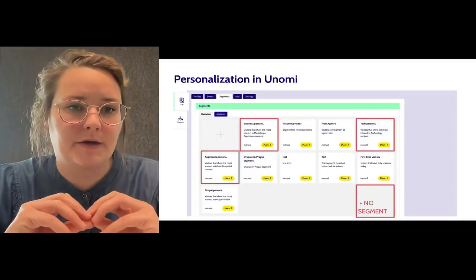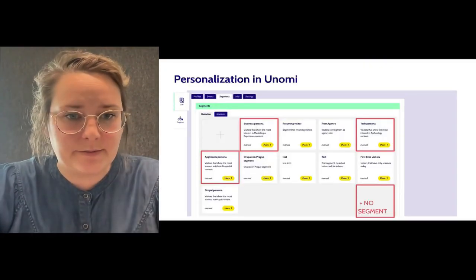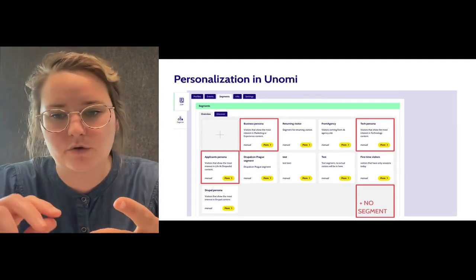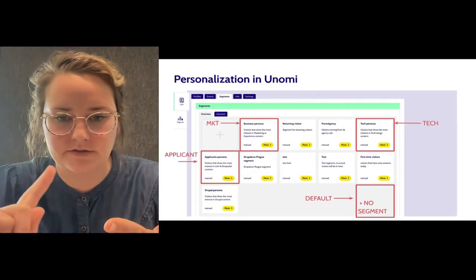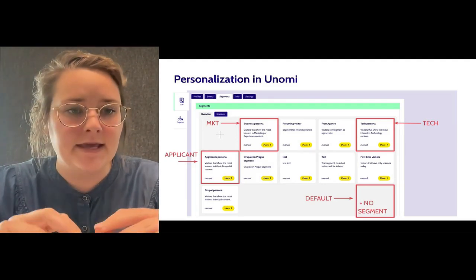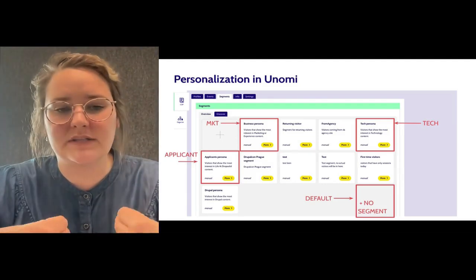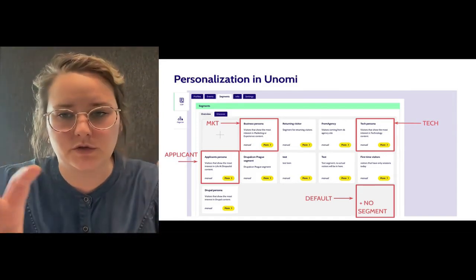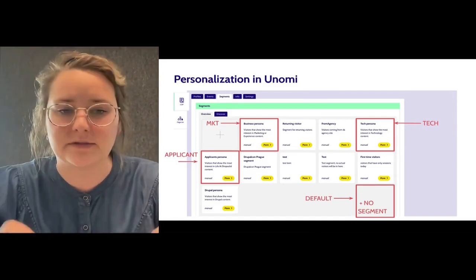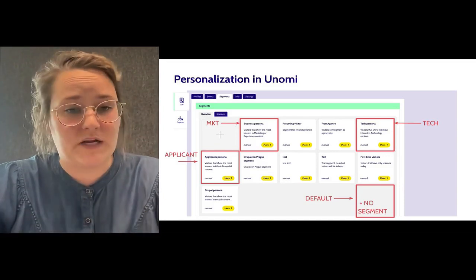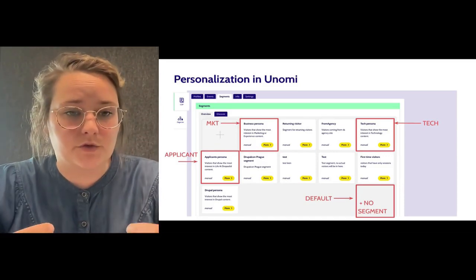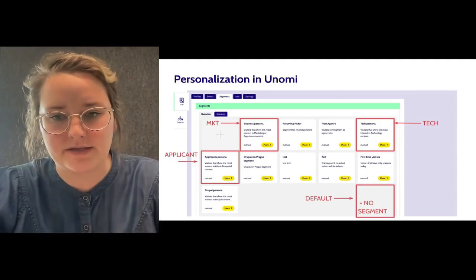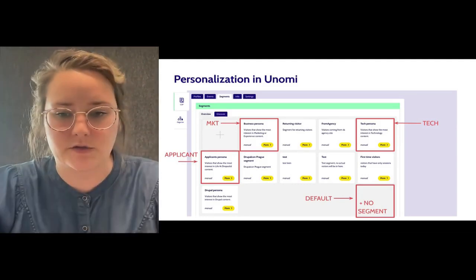Then you have Unomi, and with Unomi we are building these segments. You can see the red squares: business persona, tech persona, applicants persona, and the default if you don't have any segments yet. This is very technical — I won't go deeper into how we do this. What is important is that when you visit our website, we will put you into one of these segments based on which pages you're visiting, which content you're reading, and from which touchpoint you're coming to the website. If you need more information, don't hesitate to contact me — my details are in the last slide.